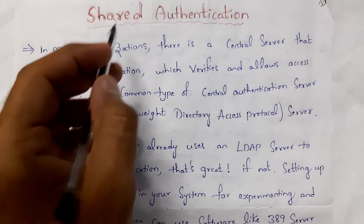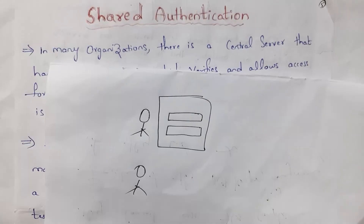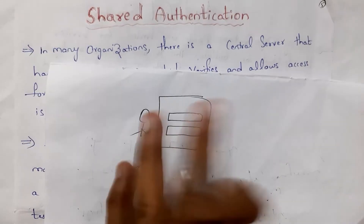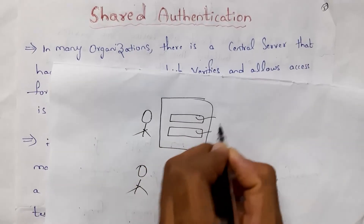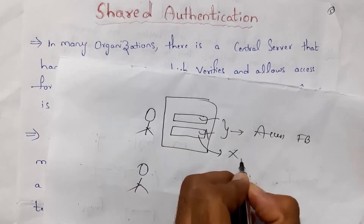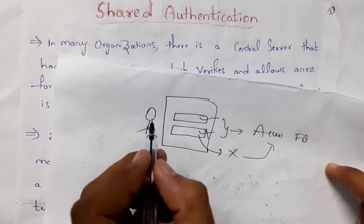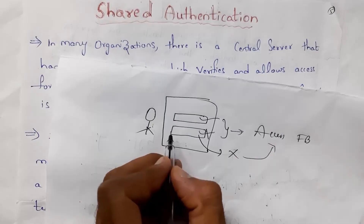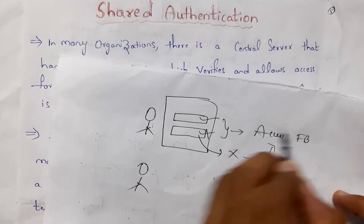The next topic is shared authentication. Authentication is nothing but verifying a user. For example, if I want to use Facebook, only if I enter the correct username and password can I access it. If I enter the wrong password, I cannot access it. So authentication is verifying whether a user is the correct user or not.